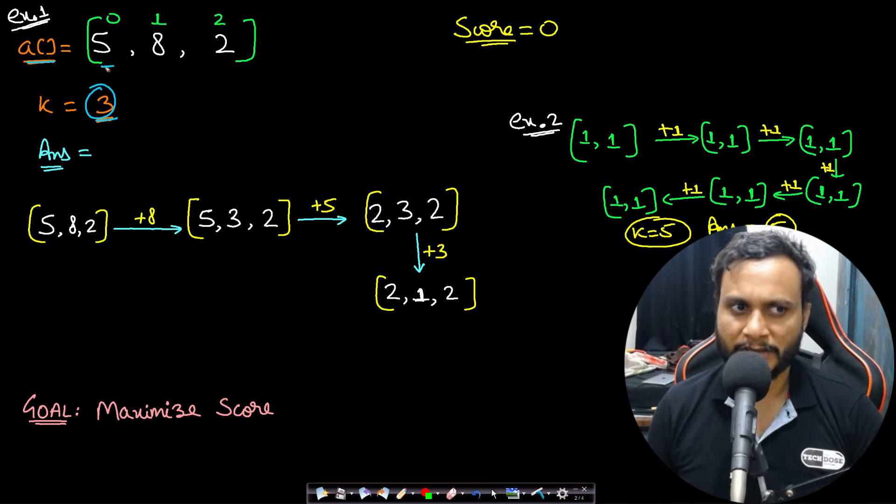In the first attempt we can choose either 5, 8, or 2. Now if you try out all possibilities then for k equals 1, that means for the first time you are picking, you can either pick 5, 8, or 2.